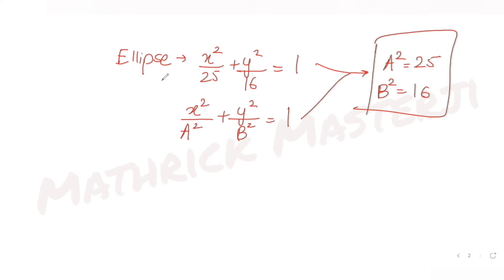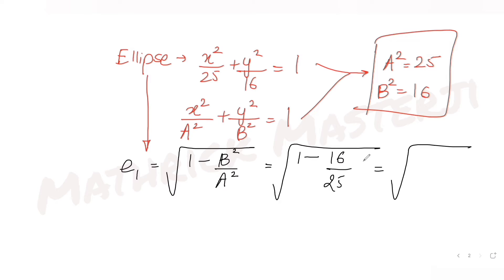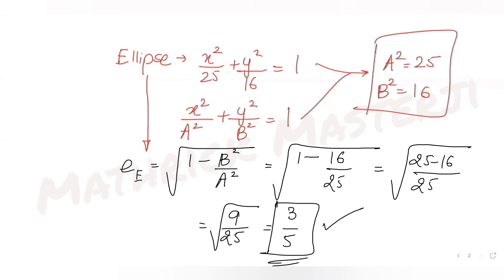With a² = 25 and b² = 16, the eccentricity of the ellipse e₁ = √(1 − b²/a²) = √(1 − 16/25) = √(9/25) = 3/5. So the eccentricity of the ellipse is 3/5.